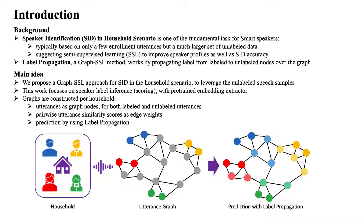Label propagation is one of the simplest graph-based semi-supervised learning methods. It works by propagating label information from labeled to unlabeled nodes over the graph, based on sample similarity.